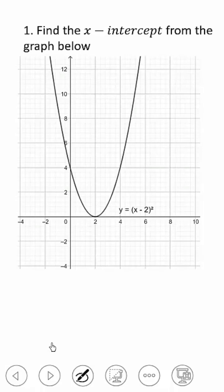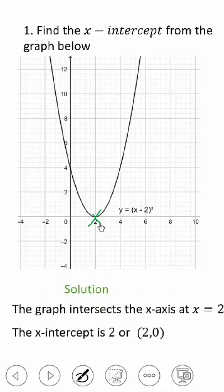Let's look at how we can find the x-intercept. When you are given a graph and you are asked to find the x-intercept, look at where the graph intersects the x-axis. That point is the x-intercept.